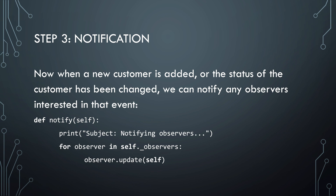You can notify each observer in the customer class whenever something has changed. Here's an example of what that could look like in code. Because of the way the pattern is set up, you don't need to know anything about these observers, except that they have an update method that you should call.